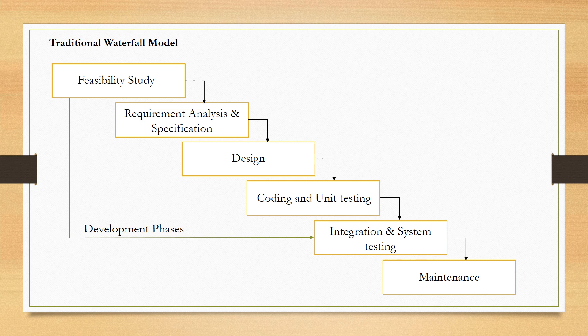Moving to the third phase, the design phase: humans grasp things better when presented in pictorial form rather than theoretical. So all the requirements mentioned in the SRS are converted into a design. This design is then converted into coding, done module by module. After completing the coding of each module, all modules are tested individually — this is called unit testing. Then modules are combined and integrated one by one incrementally, and the partially developed system is tested each time. After all modules are integrated, the whole system is tested, which is called system testing, to check that the entire system is working properly.